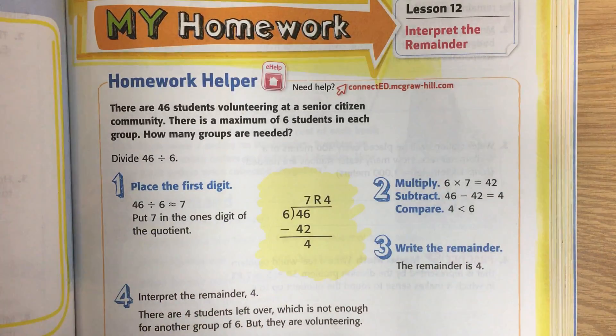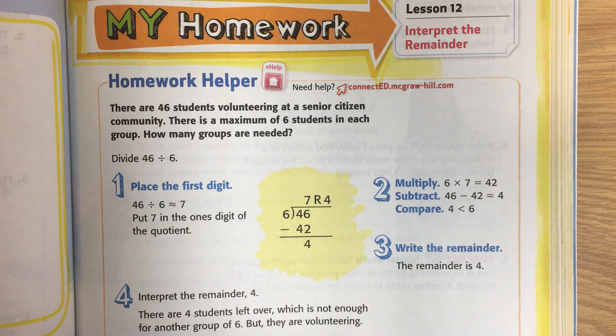There are 46 students volunteering at a senior citizens community. There's a maximum of six students in each group. How many groups are needed?